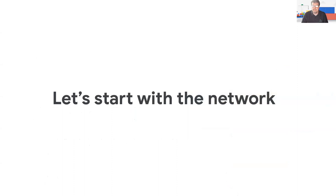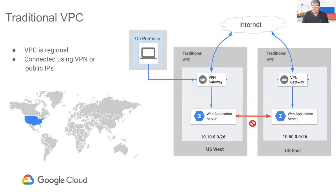Before containerization, let's look at the network underlying Google's cloud product. Traditionally, other cloud providers used regional Virtual Private Clouds — a VPC in the west and one in the east, separate and segmented. Connecting those two networks required transiting the public internet or creating expensive peering. Google took a different approach by coming into the cloud space a bit later, allowing us to mature our internal product and improve on what the market had done.